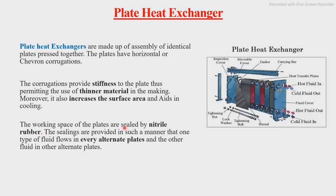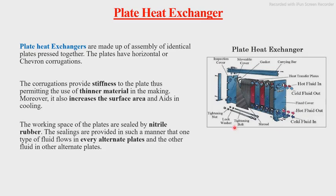The working spaces of the plates are sealed by nitrile rubber. The sealing is done in such a way that one fluid flows in every alternate plate — one plate carries cold fluid, the next carries hot fluid, then cold again, then hot again. This sequence continues till the last plate. This is the arrangement of a plate type heat exchanger, and the various parts are labeled in the diagram.